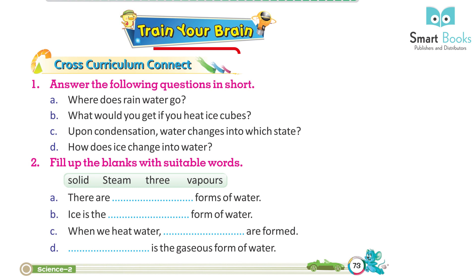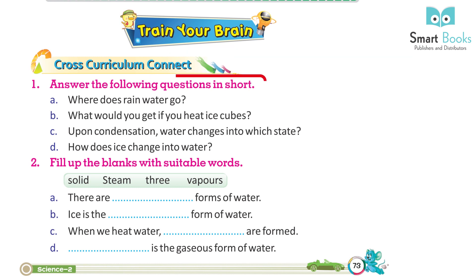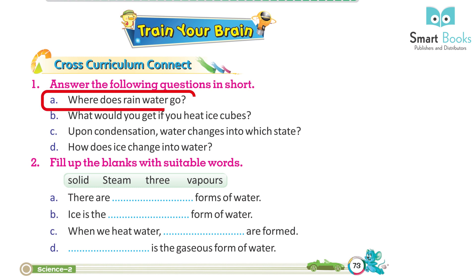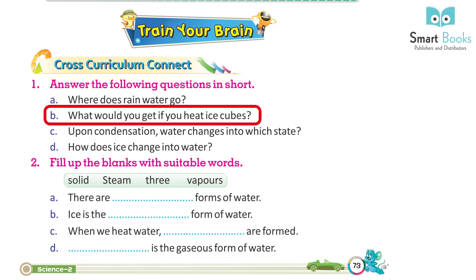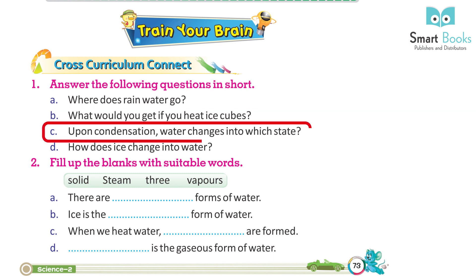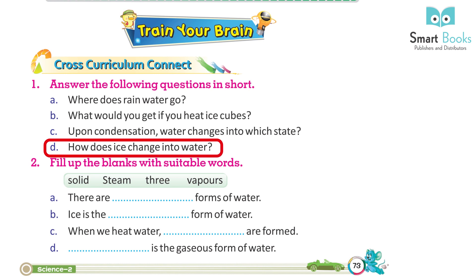Train your brain — cross curriculum connect. Answer the following questions in short: A. Where does rainwater go? B. What would you get if you heat ice cubes? C. Upon condensation, water changes into which state? D. How does ice change into water?